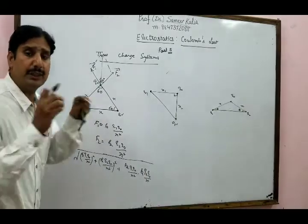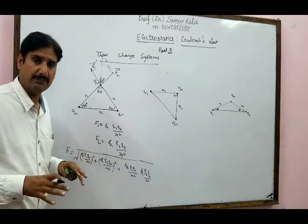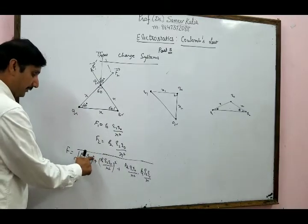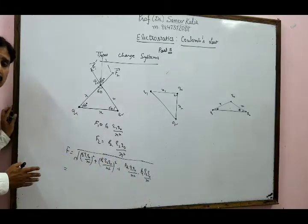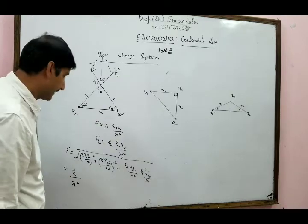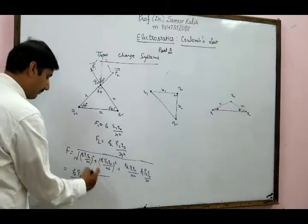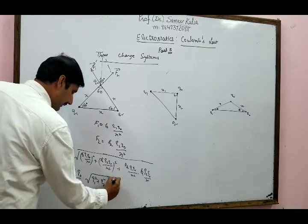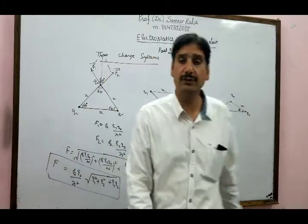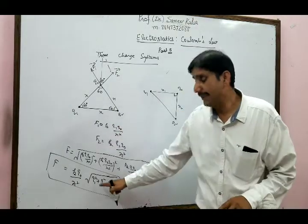Before substituting values, you can simplify. K² appears in every term, so K² comes out of the square root as K. Similarly, X² and Q0 factor out cleanly. What remains inside the square root is simply Q1² + Q2² + Q1·Q2. So the resultant force is K·Q0/X² · √(Q1² + Q2² + Q1·Q2). When values are given for Q1 and Q2, substituting them becomes straightforward.